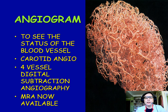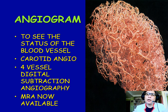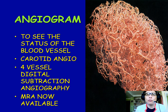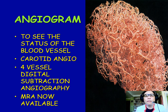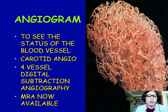The next test is the angiogram. The angiogram is a whole set of different tests — there are many types — but its main purpose is to see the status of the blood vessels. The MRI and CT scan cannot see the status of blood vessels, but the angiogram can. The first angiogram that came out was the carotid angiogram.